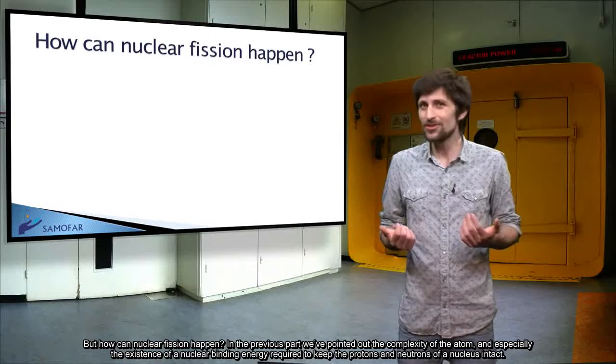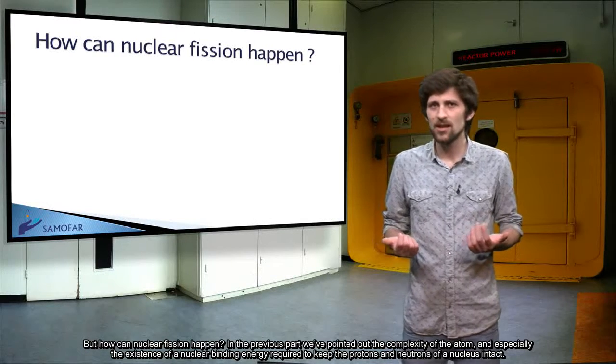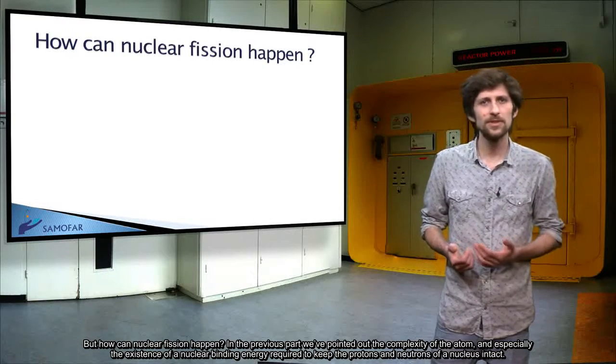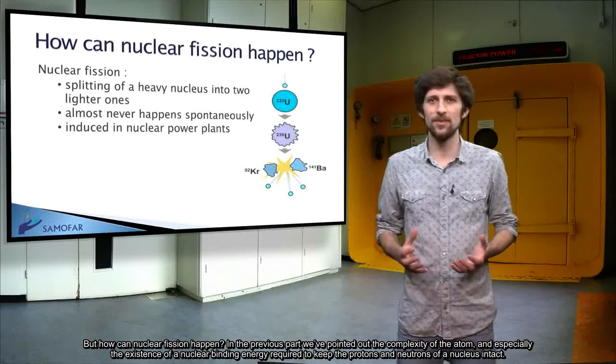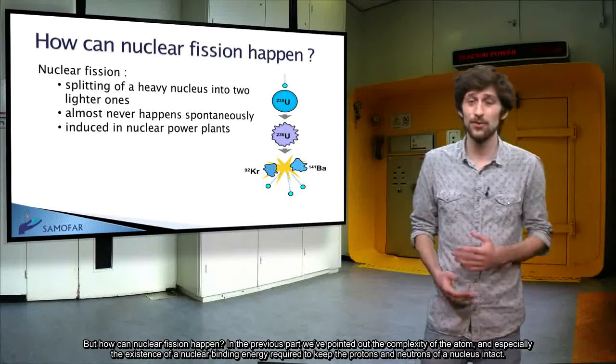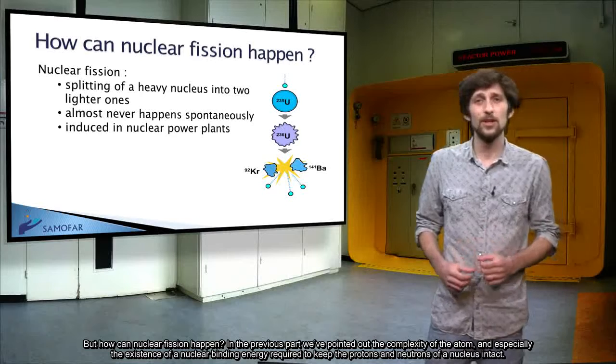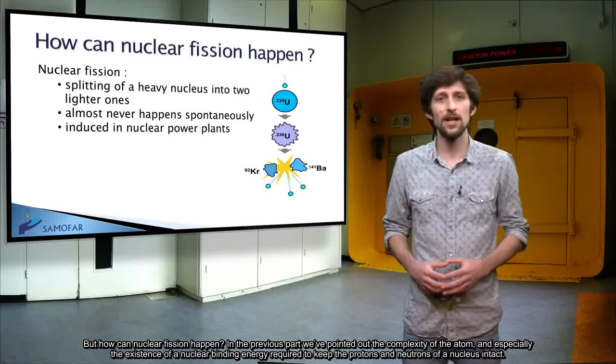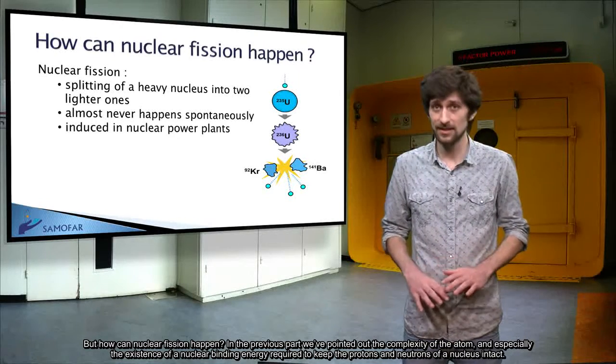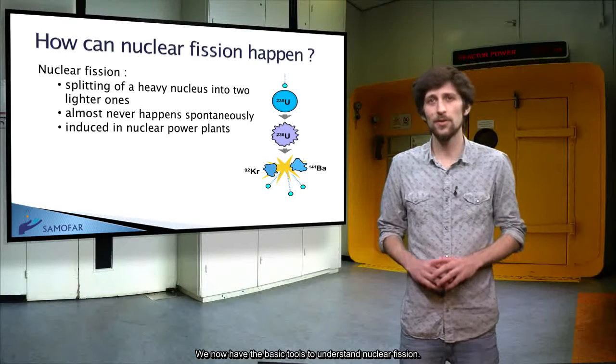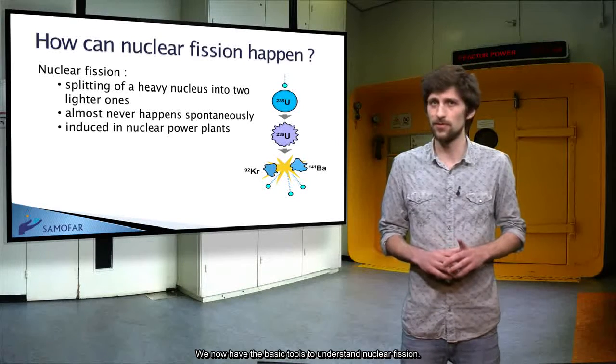But how can nuclear fission happen? In the previous part, we've pointed out the complexity of the atom, and especially the existence of a nuclear-binding energy, required to keep the protons and neutrons of a nucleus intact. We now have the basic tools to understand nuclear fission.